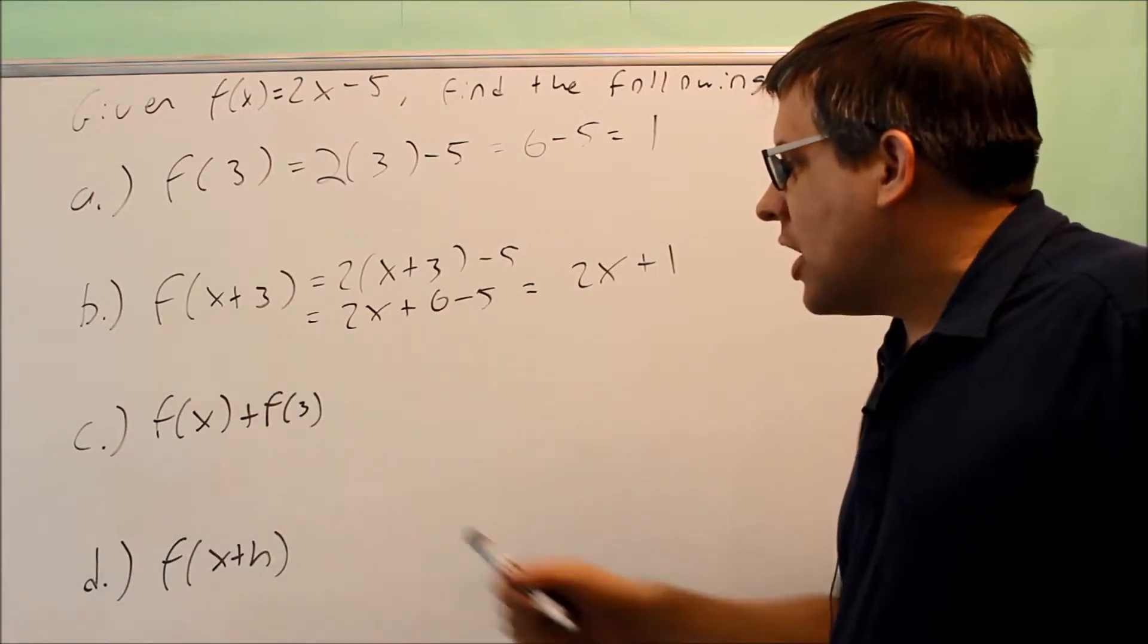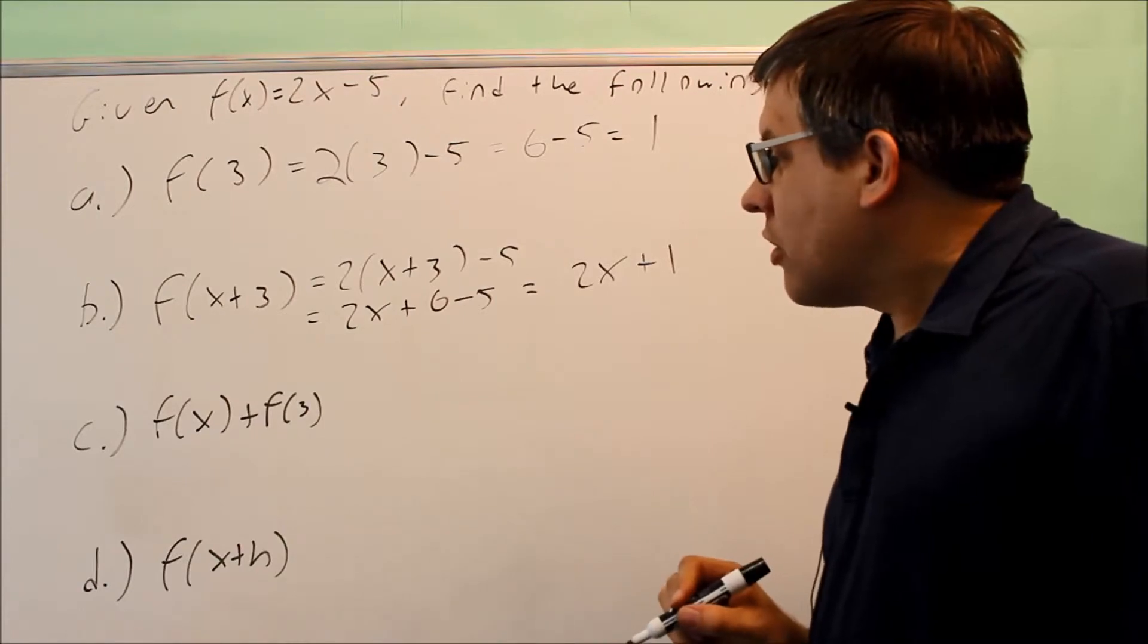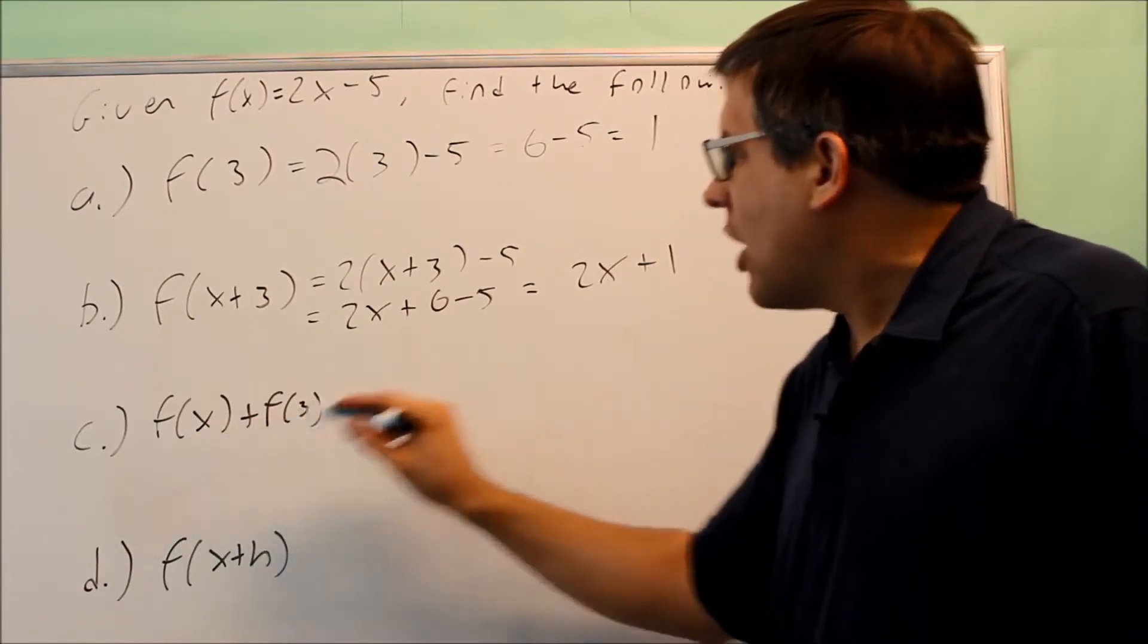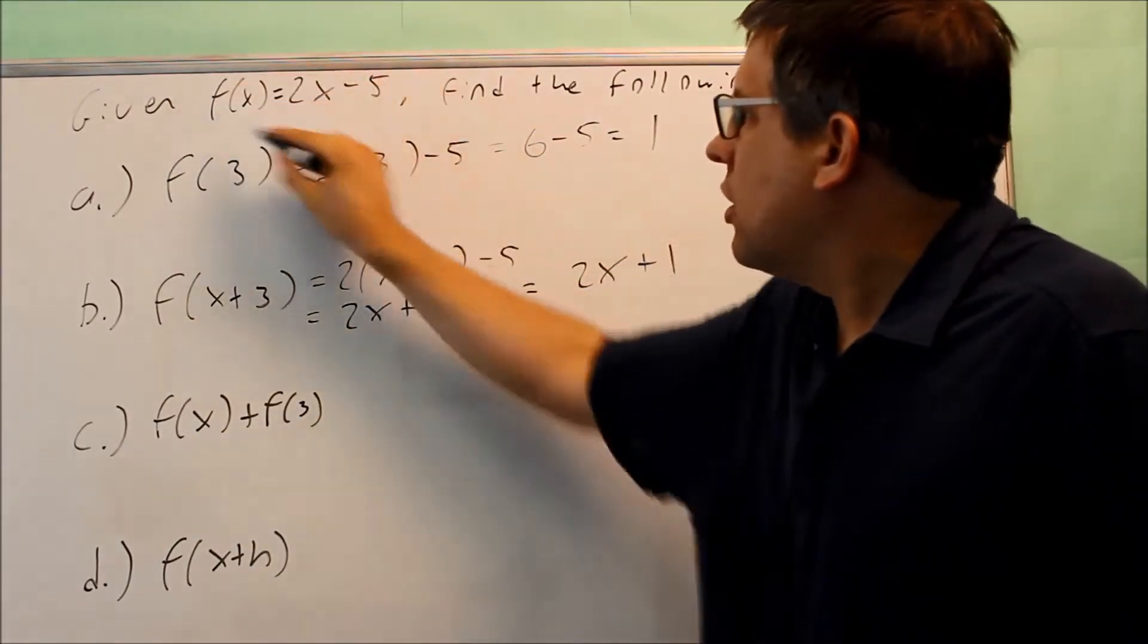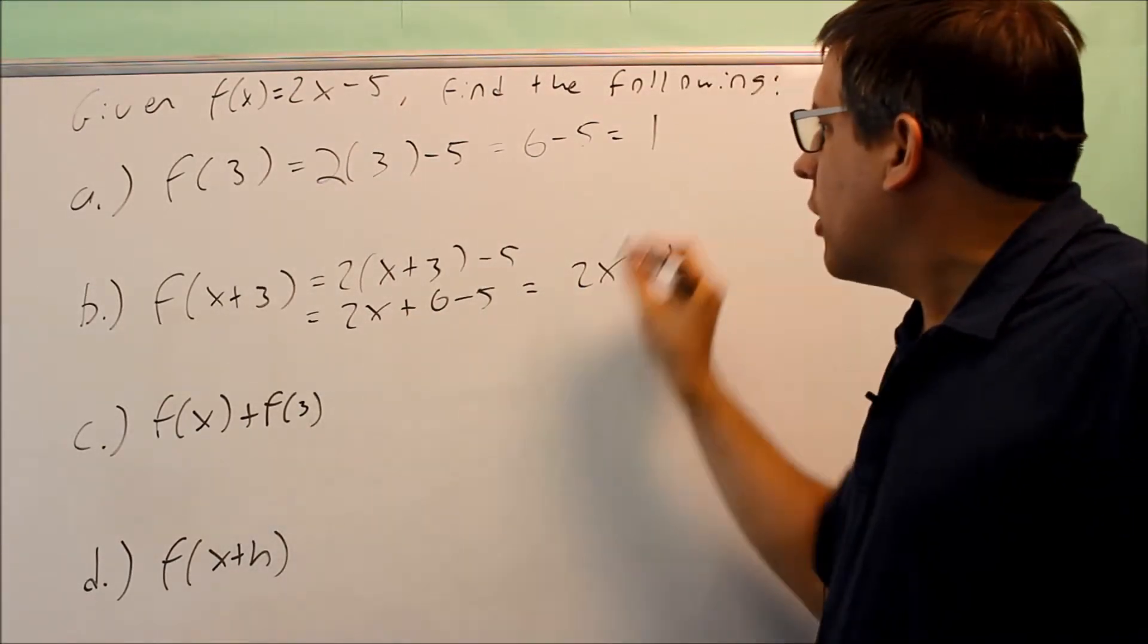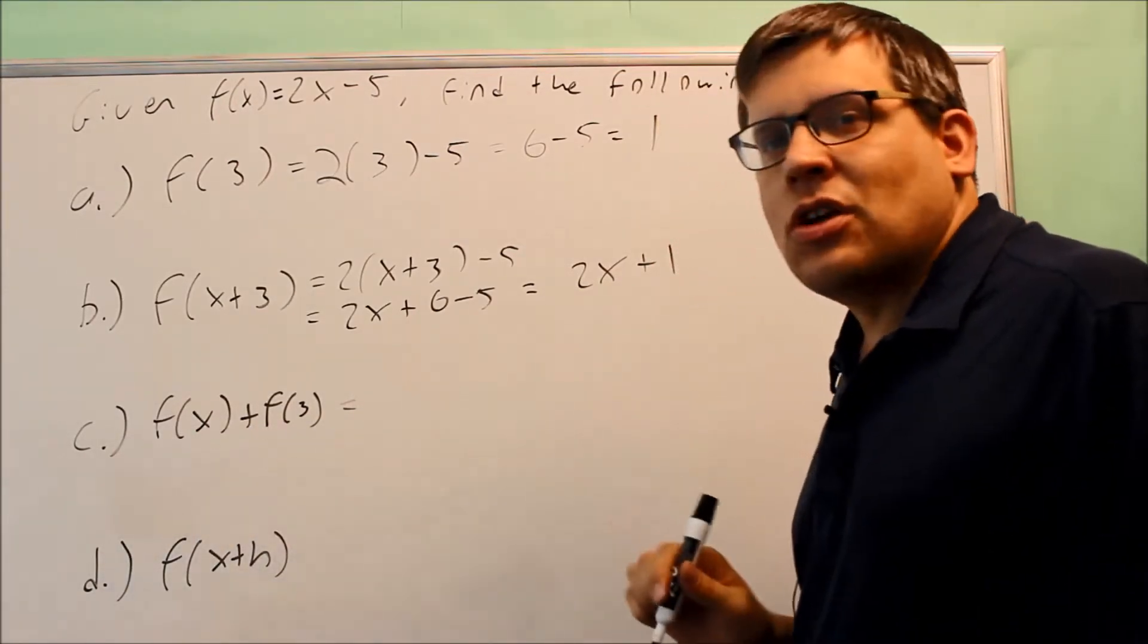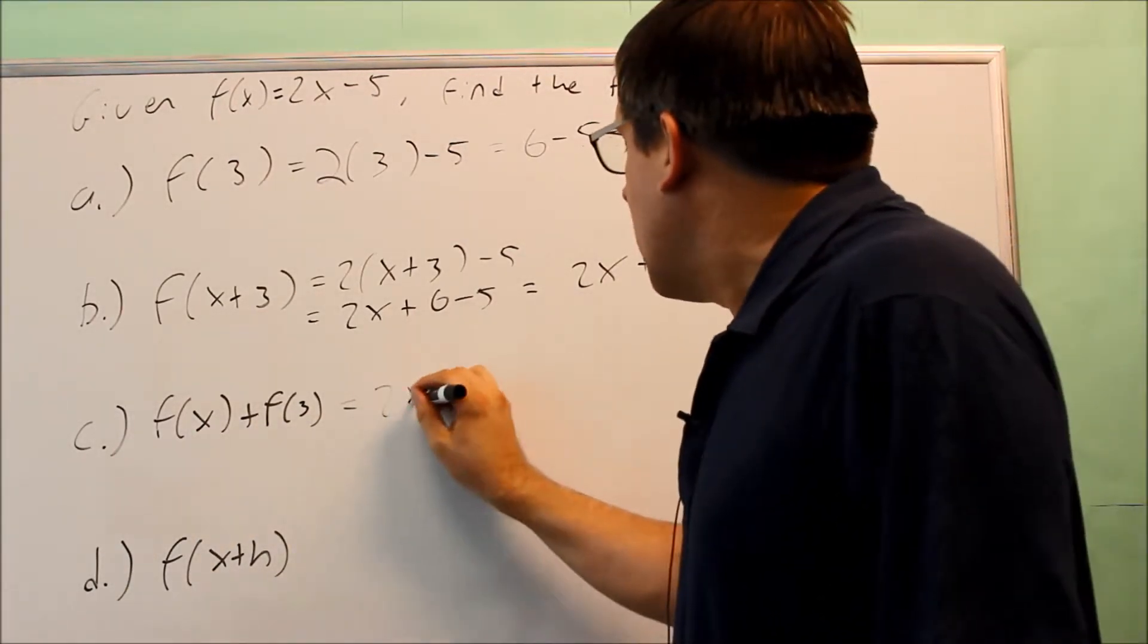Now they want us to find f(x) + f(3). Well, each of these we actually already have done. f(x) was just the original equation right here that was given. That's 2x - 5. And then f(3), we already did that in part A. So all we're going to do is just substitute the two different pieces in. f(x) is 2x - 5,